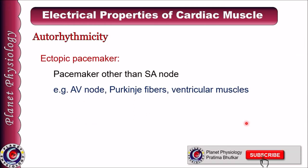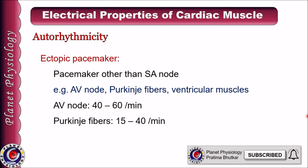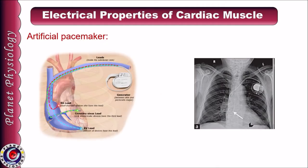If the SA node fails to generate impulses, other parts like the AV node, Purkinje fibers, or ventricular muscles can take over the function of pacemaker. Any pacemaker other than the SA node is referred to as an ectopic pacemaker. If the AV node acts as pacemaker, it generates impulses at about 40 to 60 per minute, whereas Purkinje fibers or ventricular muscles generate impulses at a much slower rate of 15 to 40 per minute. This rate is sufficient to maintain circulation to vital organs at rest but not enough for routine activities, and in such cases an artificial pacemaker is implanted.